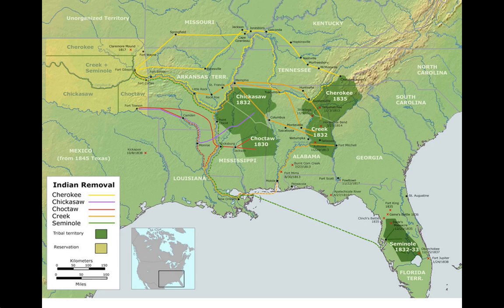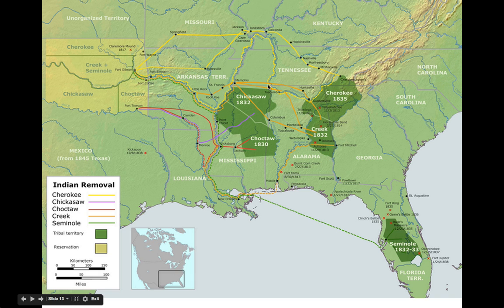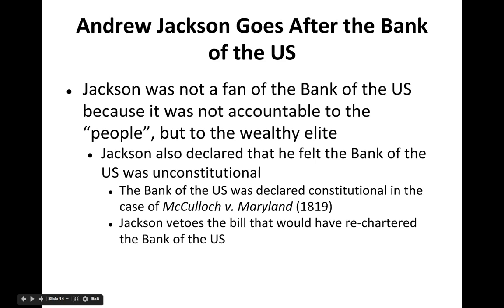This is a terrible time in American history. Many of these individuals, as they were walking, died from sickness, malnutrition, the weather, and other hardships. This map shows the locations of the Seminoles, the Cherokee, the Chickasaw, and where they had to move — west of the Mississippi, to Oklahoma.